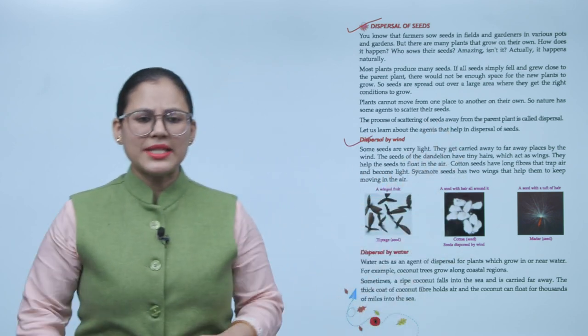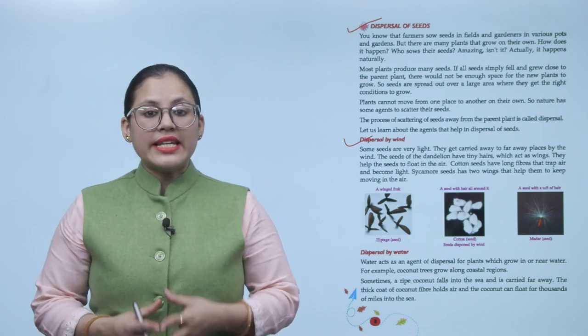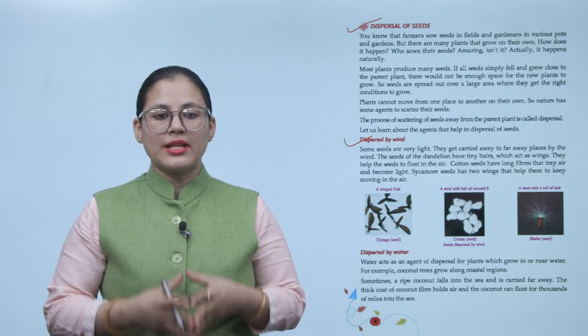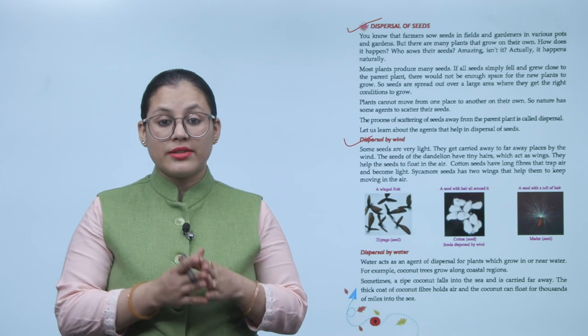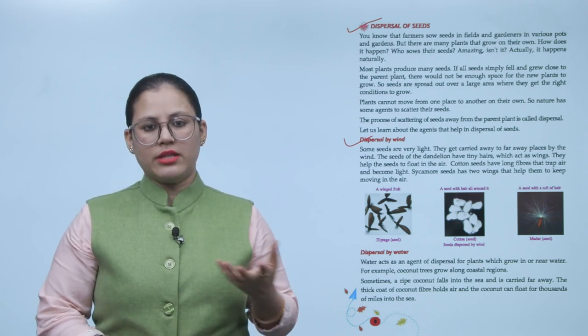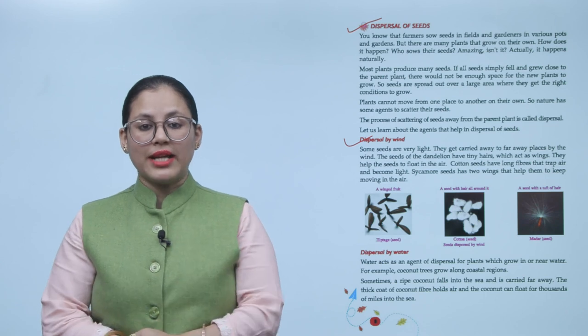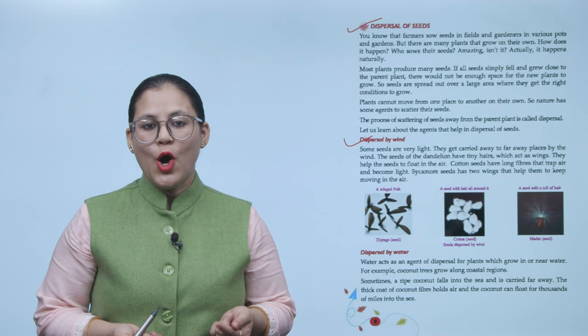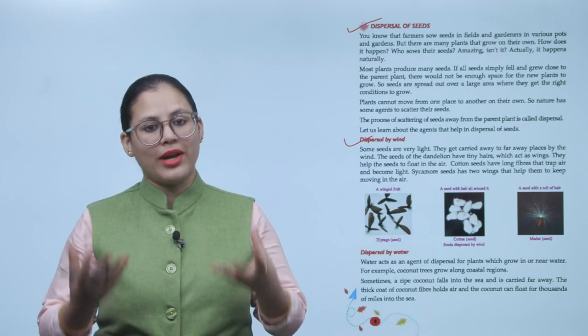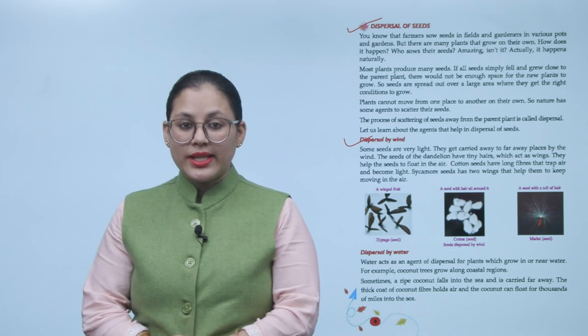Number one: Dispersal by wind. Some seeds are very light and get carried away to far away places by the wind. The seeds of the dandelion have tiny hairs which act as wings. They help the seeds to float in the air. Cotton seeds have long fibers that trap air and become light. Sycamore seeds have two wings that help them to keep moving in the air.